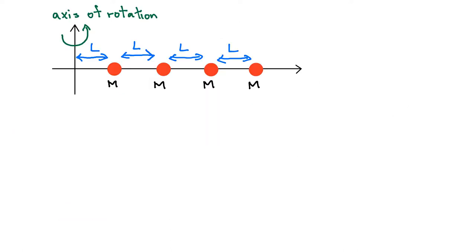Before considering the disk with the cutout, I want to first consider a simpler system — just four point masses — to see what happens when I remove one of the masses.